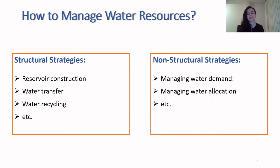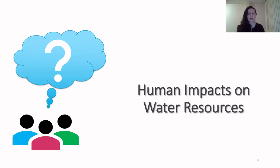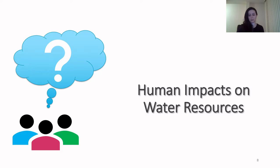As you may have noticed, these examples under both categories are mainly focused on quantitative management of water resources, whereas there are many other examples associated with issues like flood control or water quality management. For the sake of time, here I am focusing on quantitative management of water resources. When we manage our water resources, we are actually changing the natural system to match the timing and the amount of available water to our requirements. So let's see how we impact the water system when we try to manage it.